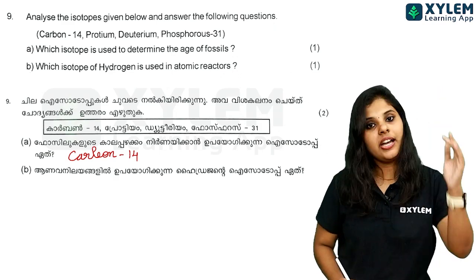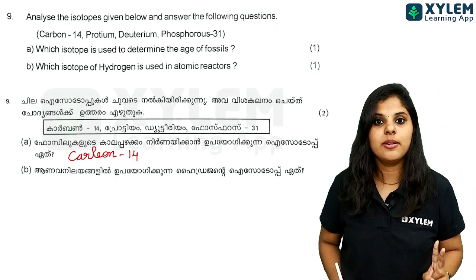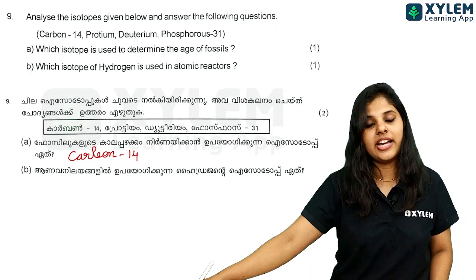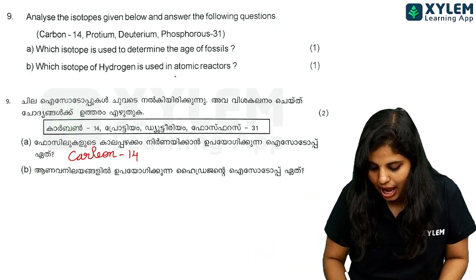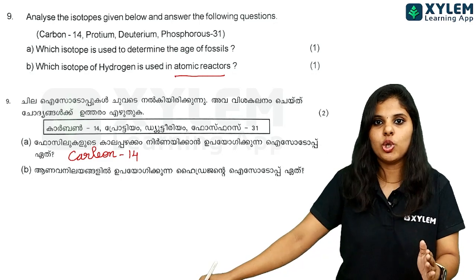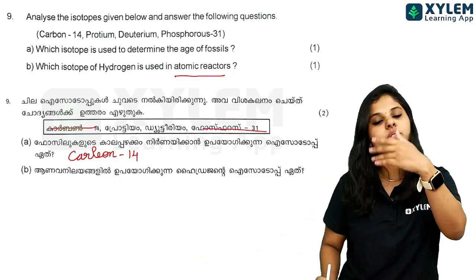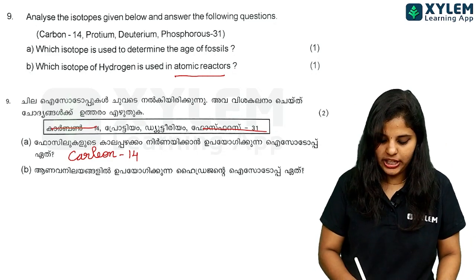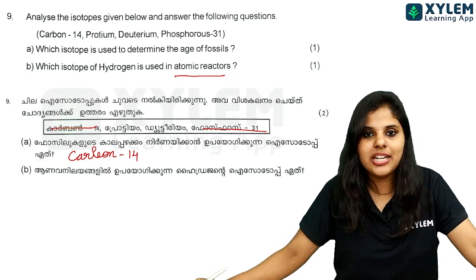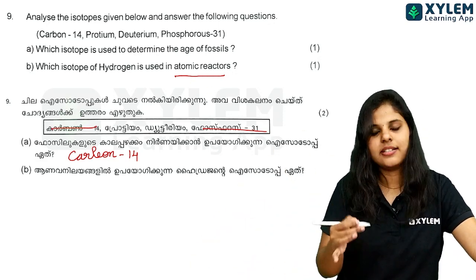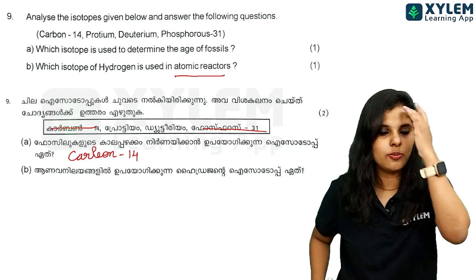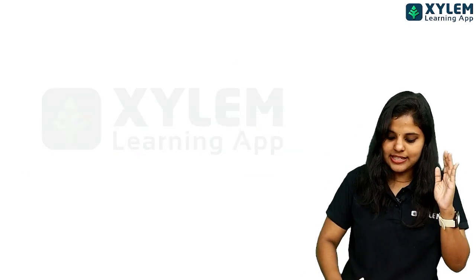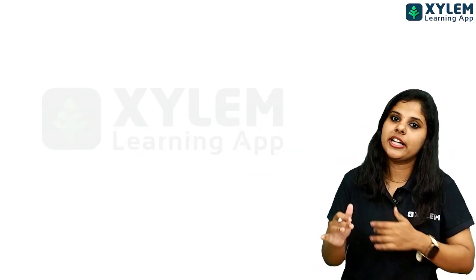The next question is part B — one mark. Which isotope of hydrogen is used in atomic reactors? Hydrogen isotopes include Carbon-14 and Phosphorus-31. Hydrogen isotopes are Protium and Deuterium. Deuterium is the answer. Deuterium is used in atomic reactors.